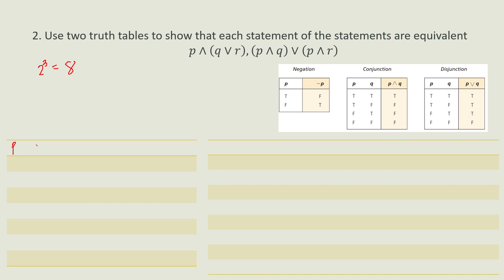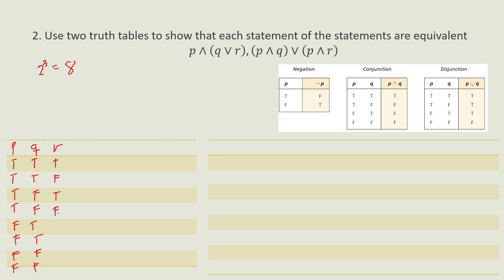For the P, Q, R truth table with 8 rows: P is true, true, true, true, false, false, false, false. Q is true, true, false, false, true, true, false, false. R is true, false, true, false, true, false, true, false.